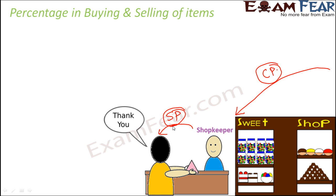How does the shopkeeper make profit? Let's say the shopkeeper bought a particular item for rupees 10 and sold it for rupees 15. He made a profit of rupees 5. This extra 5 rupees which he got is his profit — this is how the shopkeeper makes profit.